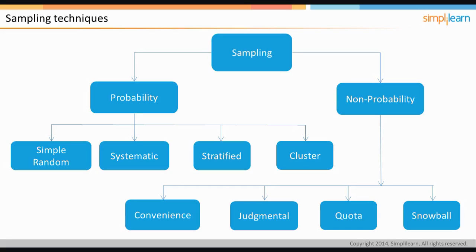In judgmental sampling, the population element is selected with a specific attribute based on the judgment of the researcher. If drawing inferences is not that necessary, these samples are quite useful.